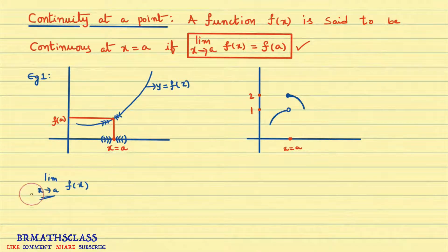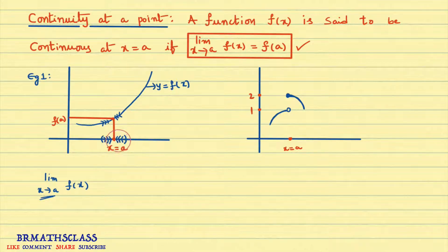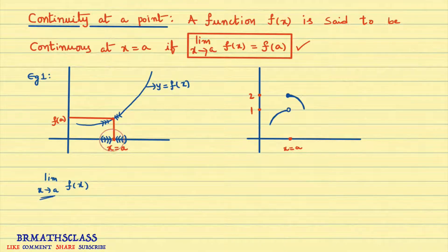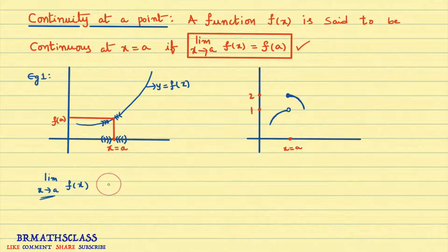For example, a train is approaching the station — that means the train is very, very near to the station, it doesn't mean the train is at the station. Same way, x approaches to a means all x values are very, very nearer to a, but x is not equal to a. The limit exists means: when x approaches to a from left and right, the function approaches a particular value. As x approaches from the left, function approaches f(a); from the right, function approaches f(a). So in this case, we say the limit exists.